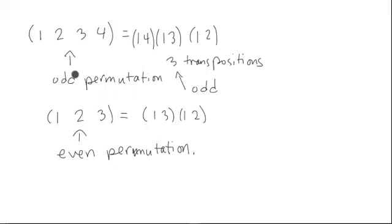So that's the difference between an odd permutation and an even permutation. It has to do with how many transpositions that make it up.